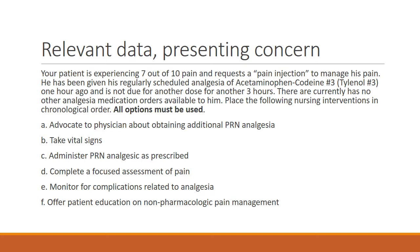In this scenario, since the patient can't have their regularly scheduled analgesia, the next steps are: advocate to the physician to obtain additional PRN analgesia, administer the prescribed analgesia as soon as you can get the order — which is the patient's main concern since they requested a pain injection — and then monitor for complications. The critical monitoring concern is that adding extra analgesia, particularly opioids, carries a risk of respiratory depression requiring further monitoring.